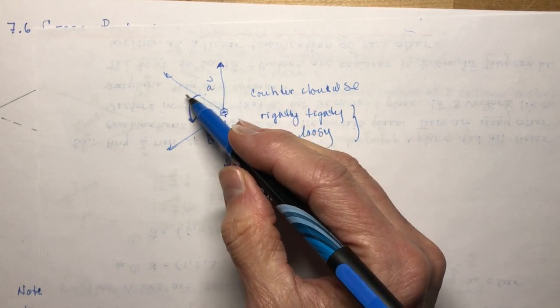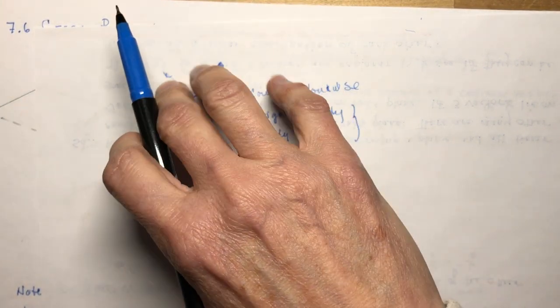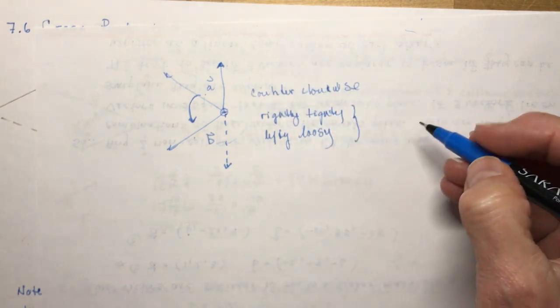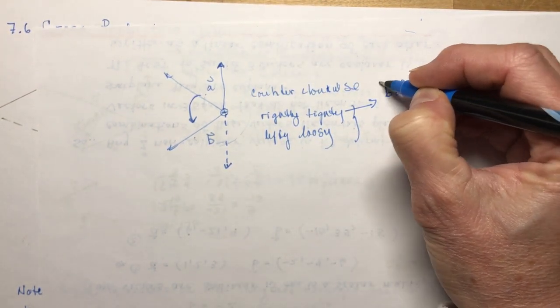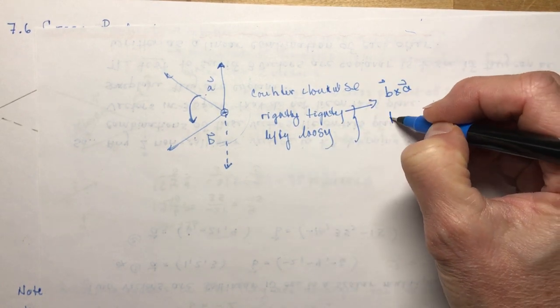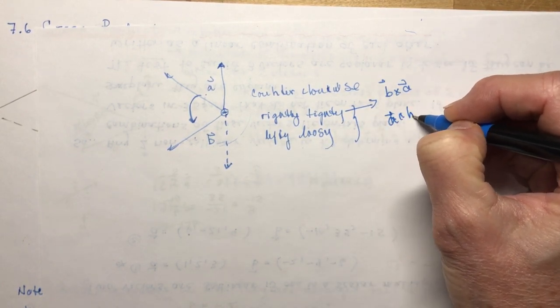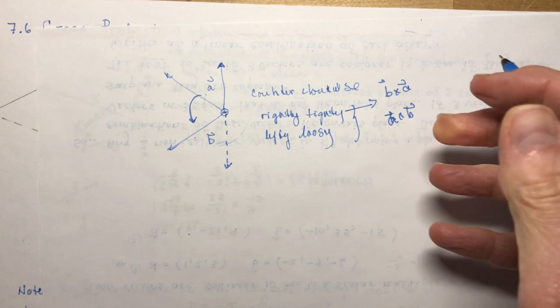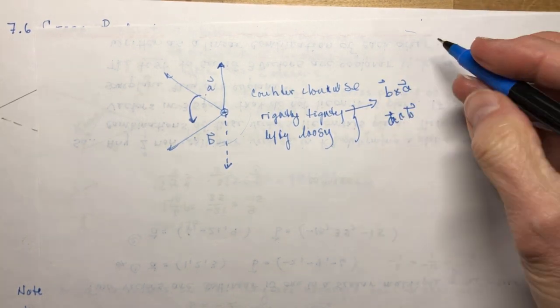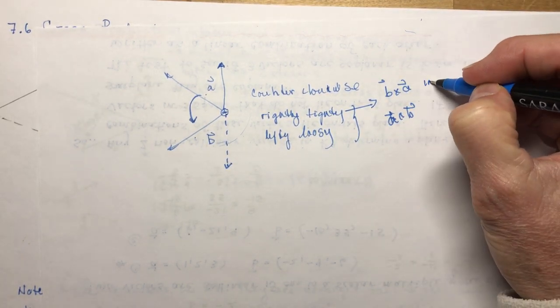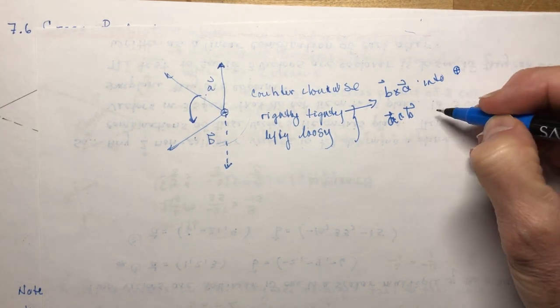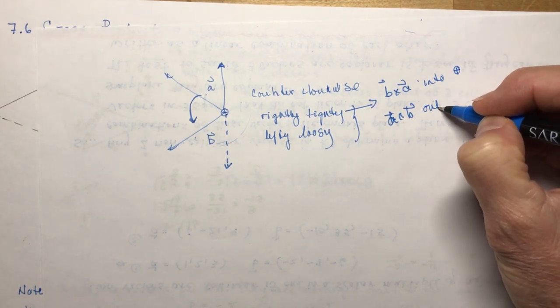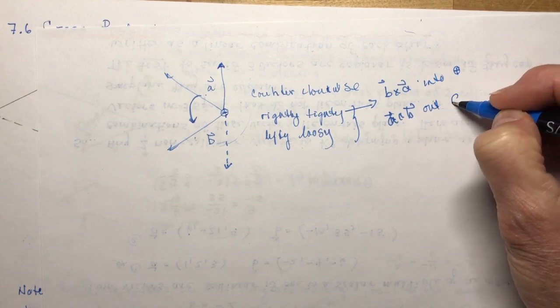Just think of it as a screw if you're tightening it you're moving to the right so that would be b cross a and lefty loosey would be a crossed with b which means if I'm tightening something it's going into the page and sometimes they'll show it like this and if it's coming out of the page it would be like this.